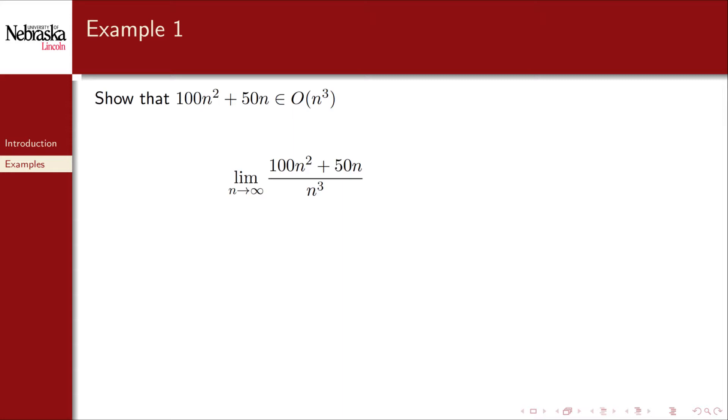Let's demonstrate using the limit method on a few examples that we've already seen. First we'll show that 100n² + 50n is Big O of n³. We set up a limit of the ratio of these two functions.